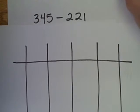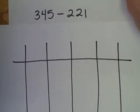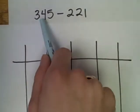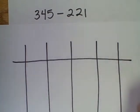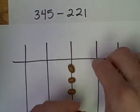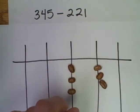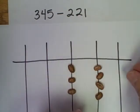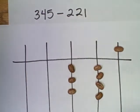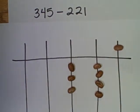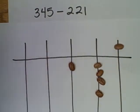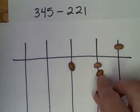With subtraction, first I'll represent the minuend, 345. And now I'll take away the subtrahend, 221. I can take away 200, I can take away 20.